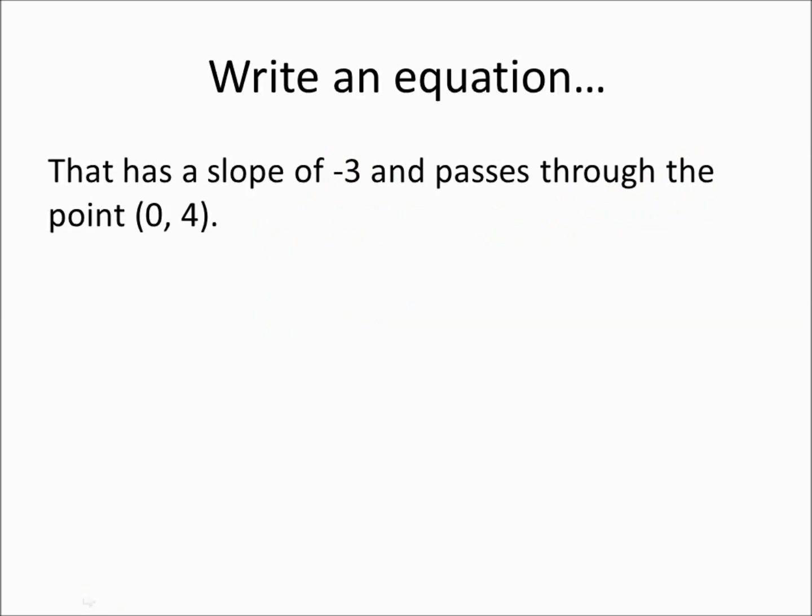Now, here it's giving us something a little bit different. It now says write an equation that has a slope of -3 and passes through the point (0, 4). So again, we've got y equals mx plus b. We've got the slope, which is -3 this time, so we can put that in, y equals -3x. And then we need the y-intercept. Now, if you'll notice, x is 0 here and y is 4. When x is 0, that is the y-intercept, which means it's plus 4.